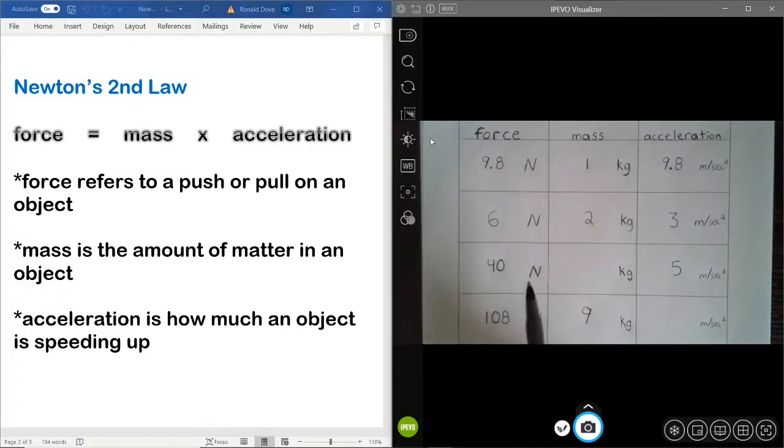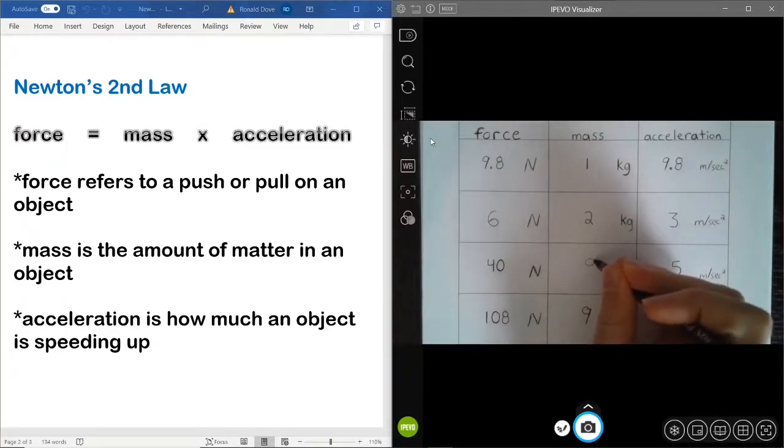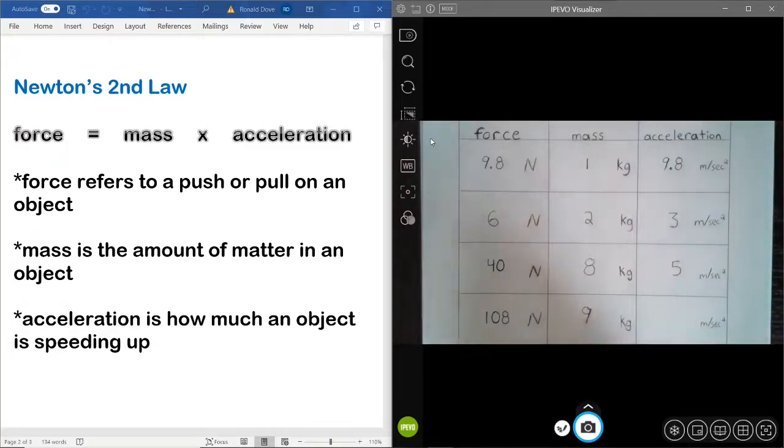Alright, now let's say that we know the force of an object is 40 Newtons. And the acceleration is 5 meters per second squared. Then, 5 times what mass would give you a force of 40? So, 5 times what equals 40? In other words, 40 divided by 5 gives you what back? Hopefully, you did the math facts. Or, you did something by hand to get you 8. Because 5 times 8 gives you 40. So, 8 kilograms for that one.